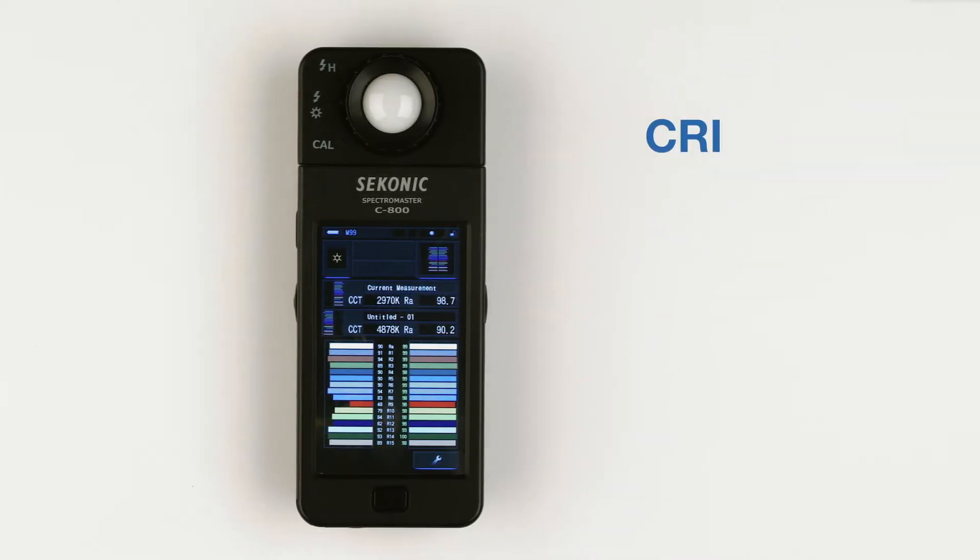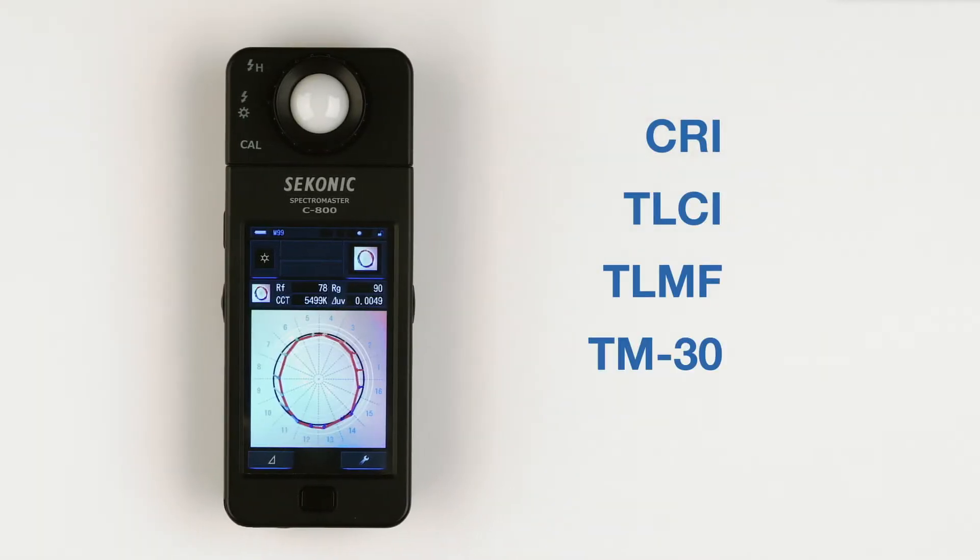The Sekonic C800 is able to measure CRI, TLCI, TLMF, TM30, and SSI. All these indexes have been designed to give you confidence in the color rendering of the lights that you are using. This video will discuss what each of these indexes mean and how you can use the C800 to evaluate and measure them. We will help you choose which one of these indexes, or a combination of indexes, that you may want to use to provide increased confidence in the lighting you use for your next production, and how to evaluate the information the C800 gives you.